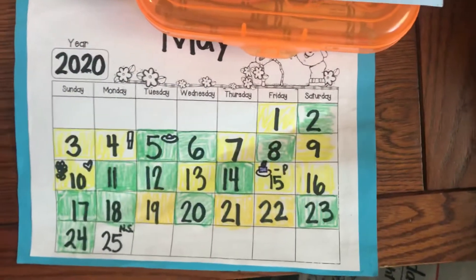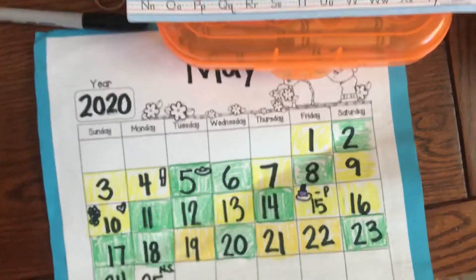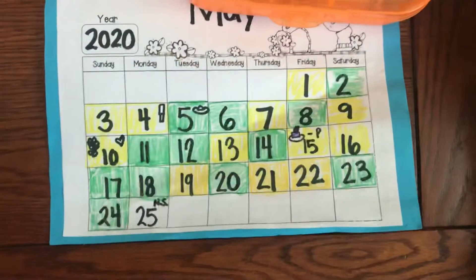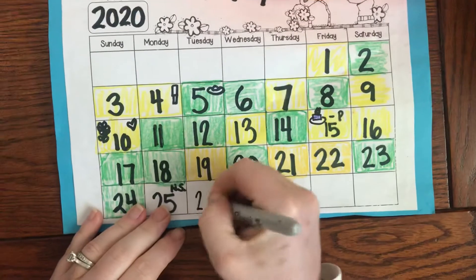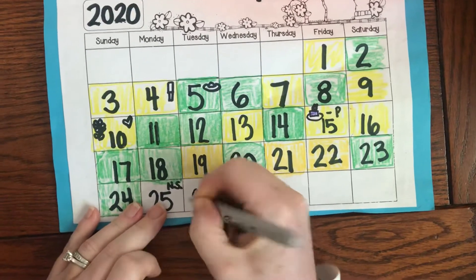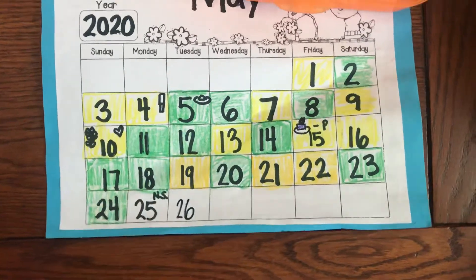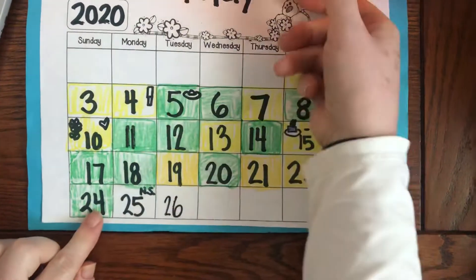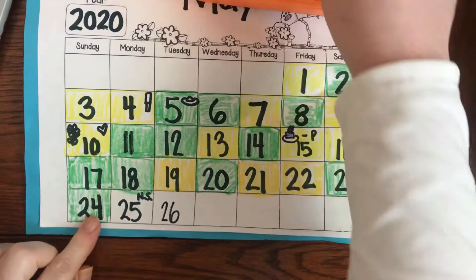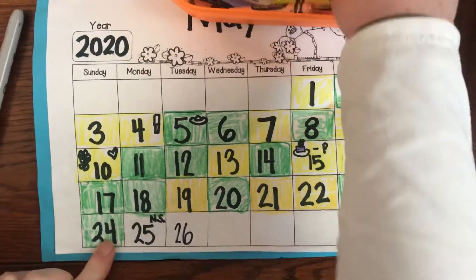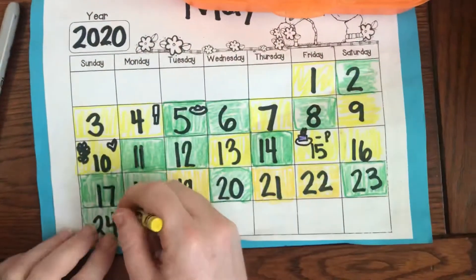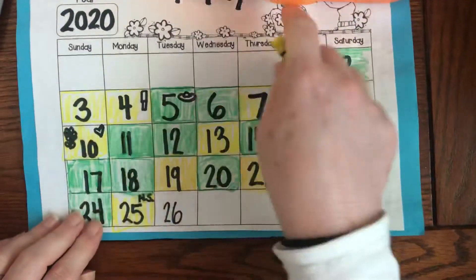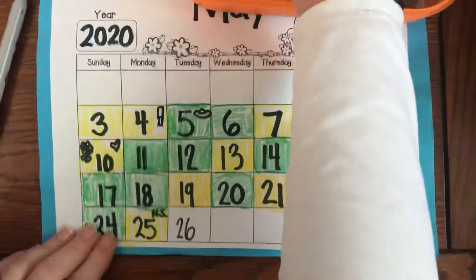Let's go ahead and look. Remember, yesterday was a holiday — there was no school. So today is the 26th. Let's look at our pattern: yellow, yellow, green, green. So now we're gonna go back to yellow and green.